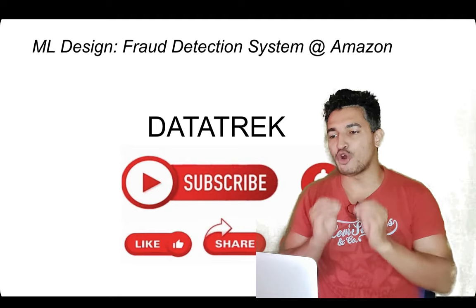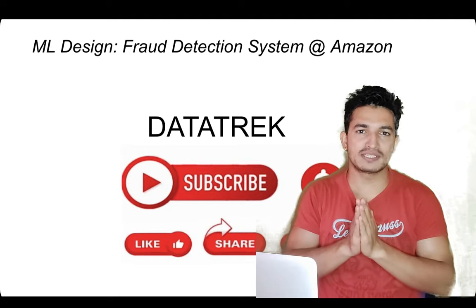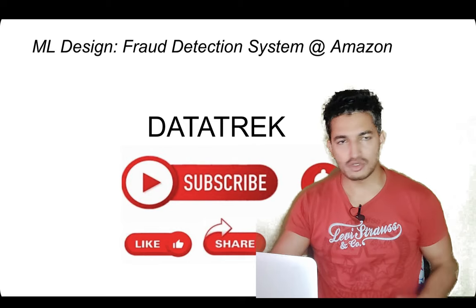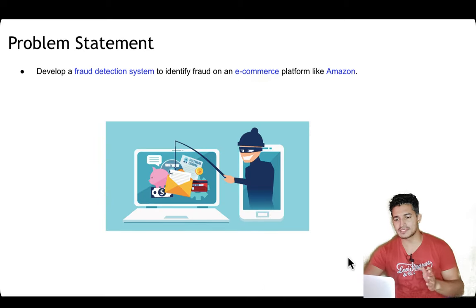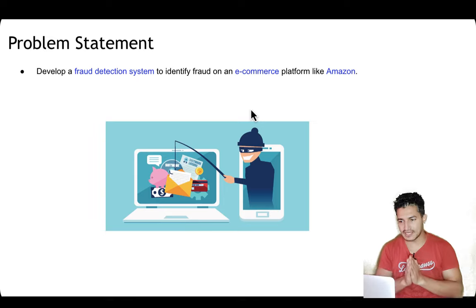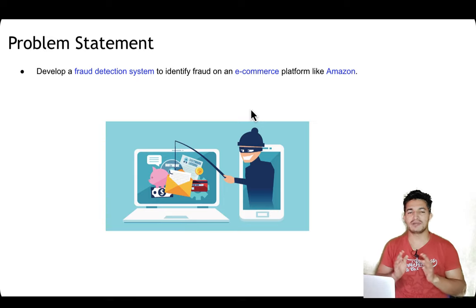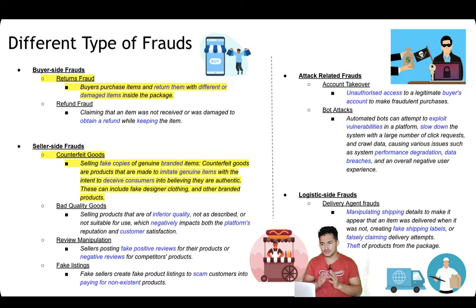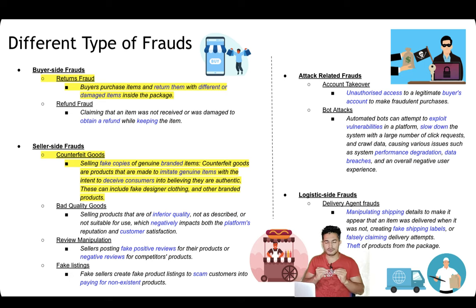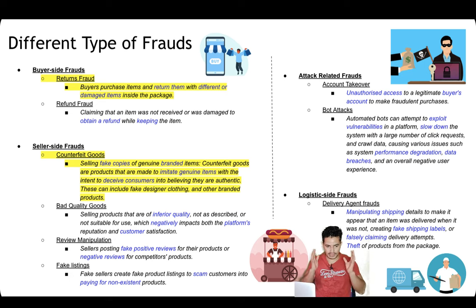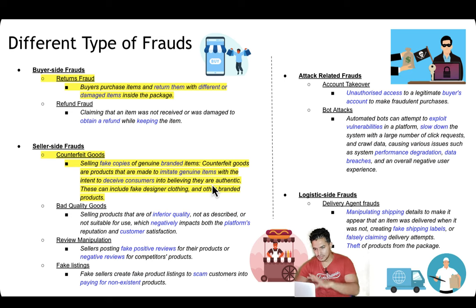In this video we will be designing a fraud detection system for an e-commerce type website — let's say Amazon. The problem statement is to develop a fraud detection system to identify fraud on an e-commerce platform like Amazon. First, you will think of all the frauds which exist on the platform. If you are working for a company, you can discuss it with business, product, and your team; and if it's an ML system design interview problem, you can come up with different frauds and discuss the scenarios with your interviewers.